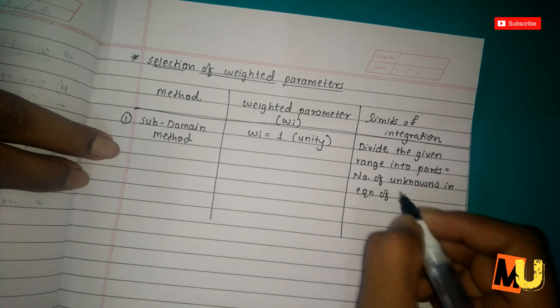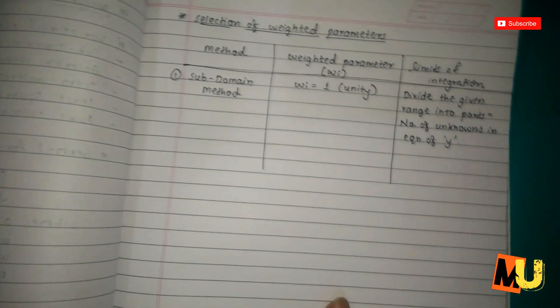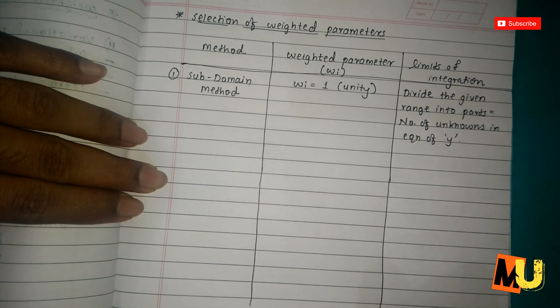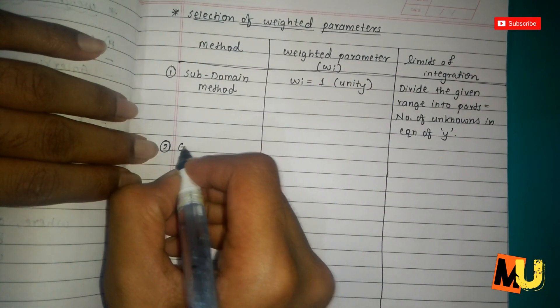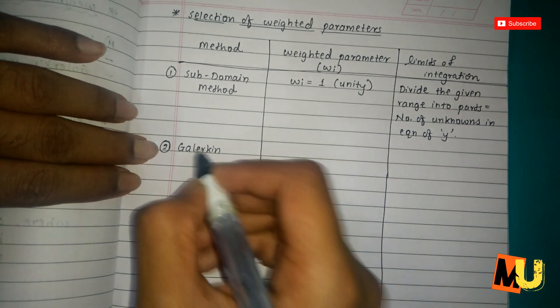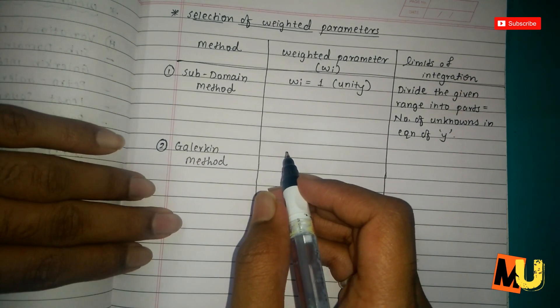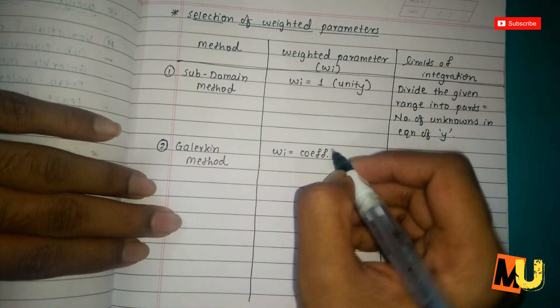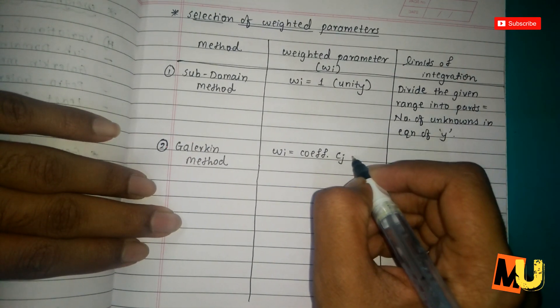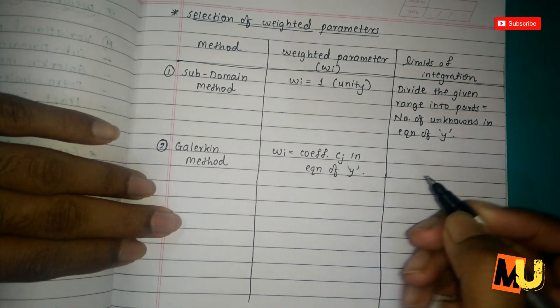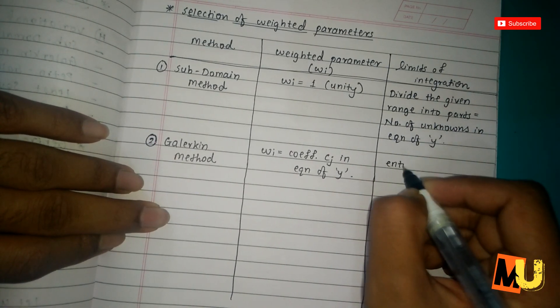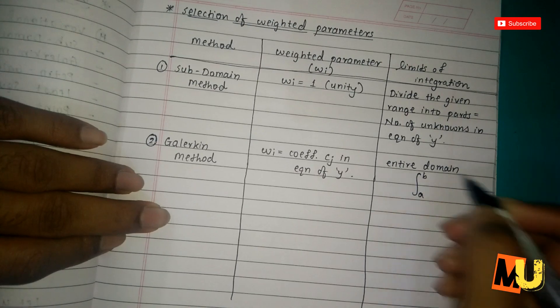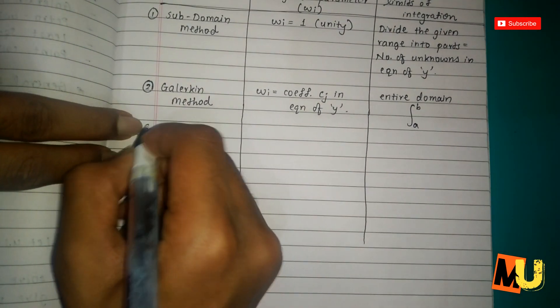I will be explaining you this table afterwards while solving the sum. Then the second method, that is Galerkin method. The weighted parameter w_i equals coefficient c_j in equation of y, and entire domain, that is a to b.